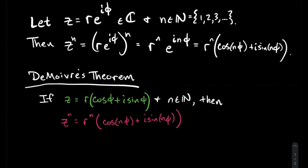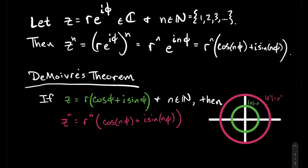To put that all together one more time: if z has polar form r times cosine of phi plus i sine of phi, and if n is a natural number, then z to the n should be r to the n times cosine of n phi plus i sine of n phi. To give you a picture — if n is a natural number and the absolute value is bigger than one, the nth power is going to be stretching the radius. And of course it works the opposite way: if the radius is smaller than one, the nth power gives a circle of smaller radius.